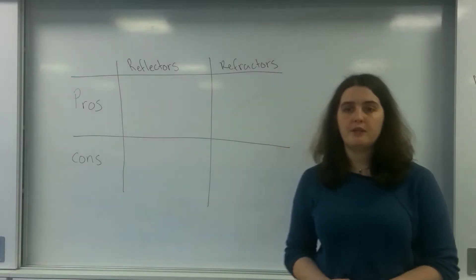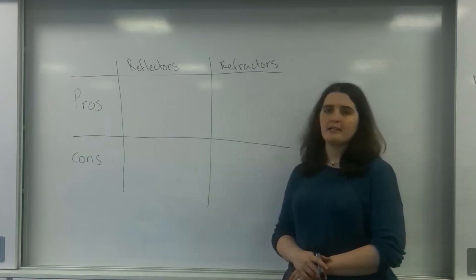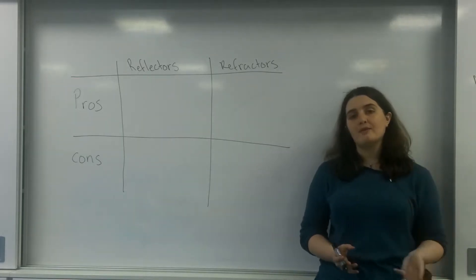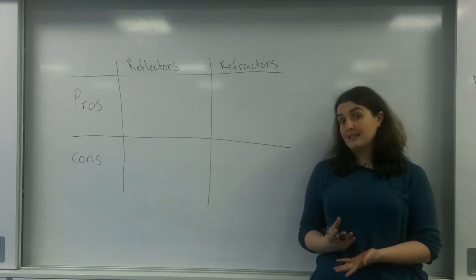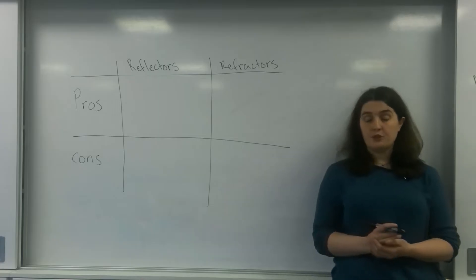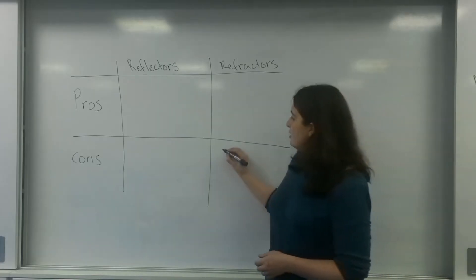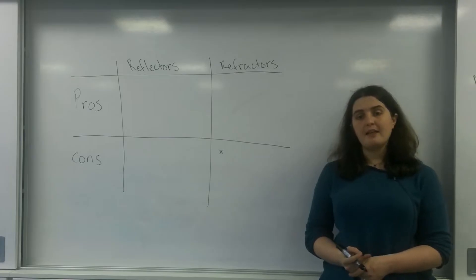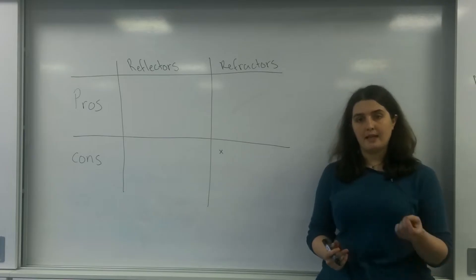What I'm going to do is firstly I'm going to talk about problems with refractors because in the world of astronomy, reflectors are always favored over refractors. And the reason why is because refractors have quite a few issues with them. The first problem with refractors is that they suffer through something called chromatic aberration.